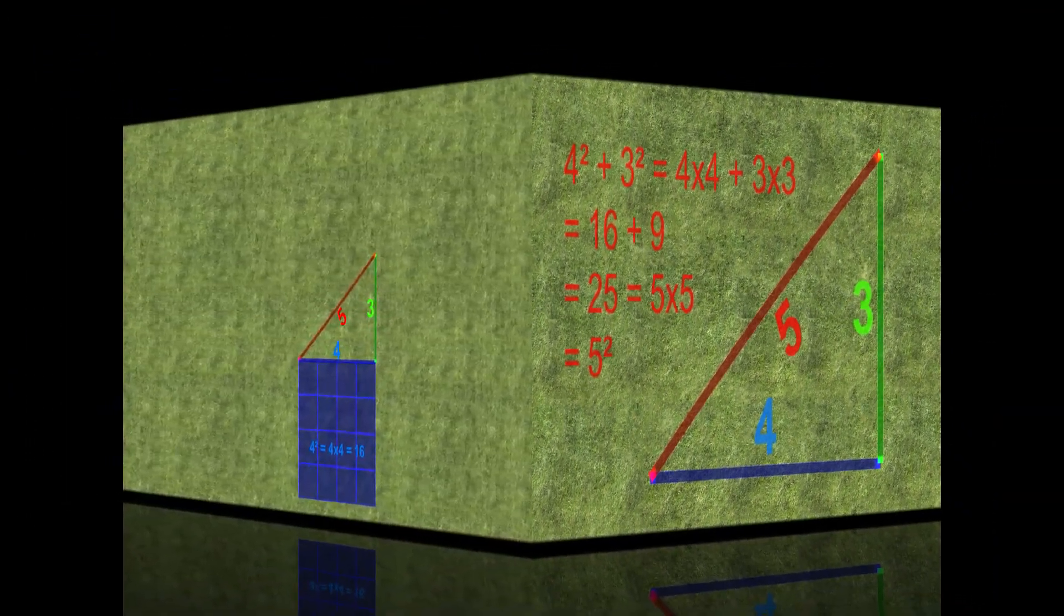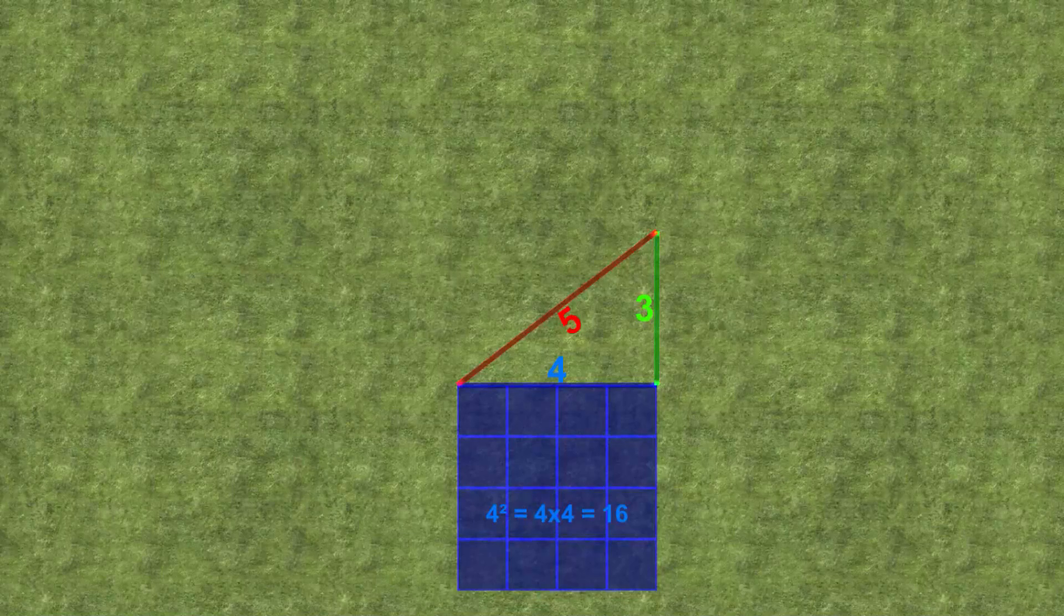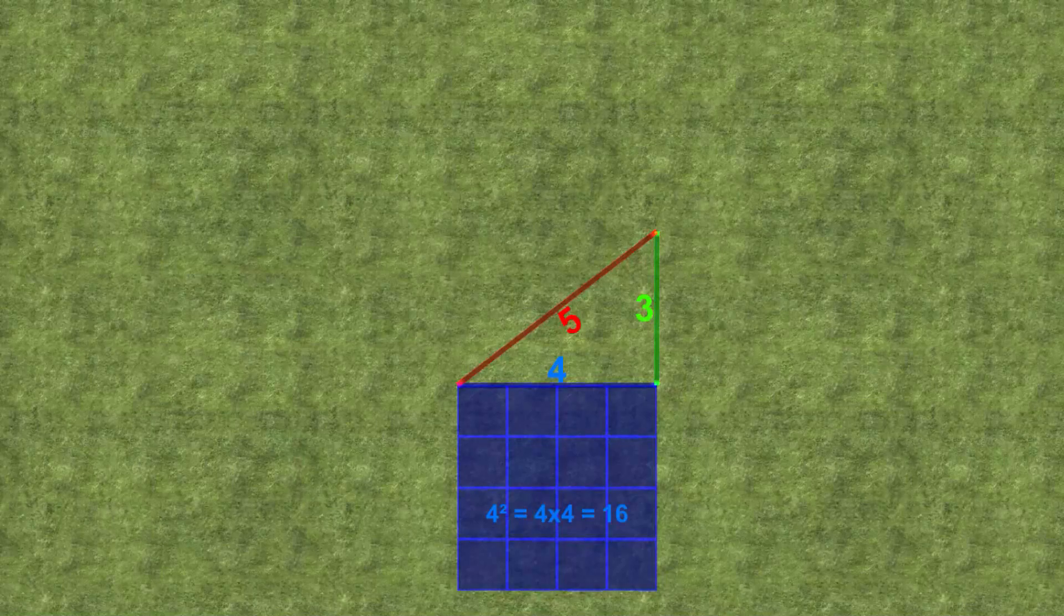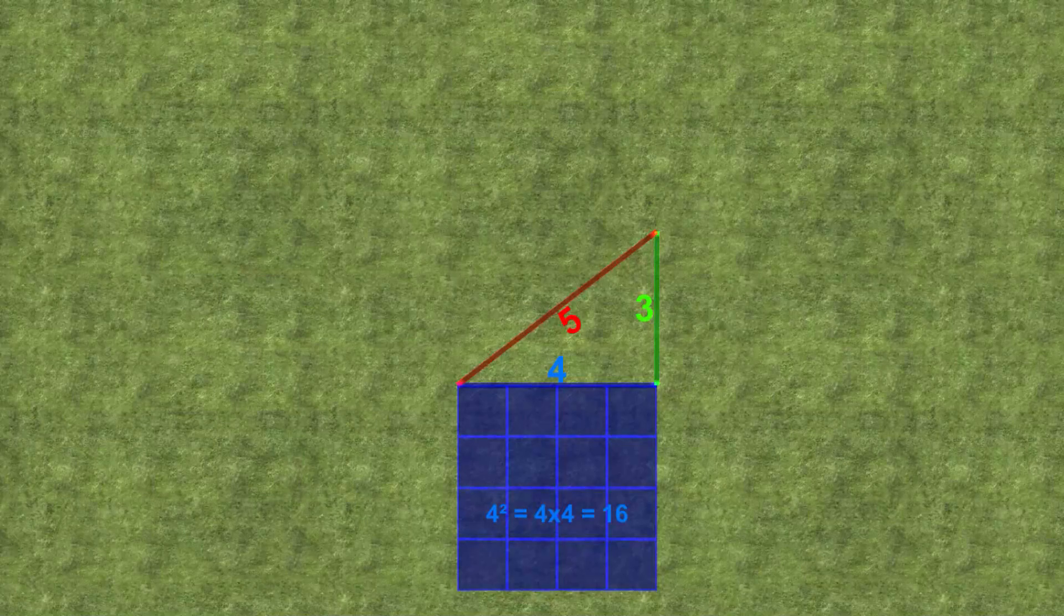What Pythagoras and the rest realized is that you can perform the calculations if you work with an area rather than a distance. Let's draw a square on the lawn for each side of the triangle and calculate their areas. Each row of the blue square contains four blocks of 1 meter by 1 meter since the length is 4 meters. There are four such rows since the width is also 4 meters. This corresponds to the 4 squared of the formula.